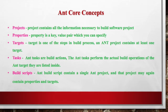An Ant property is a key-value pair which you can specify. Properties typically contain the information used in the build process. It could be directory names, file names, server names, or whatever else you may need in your project.